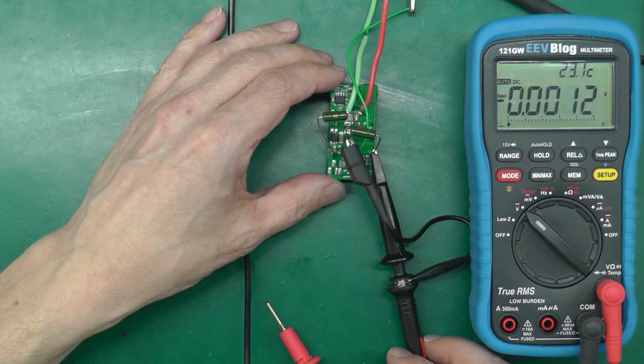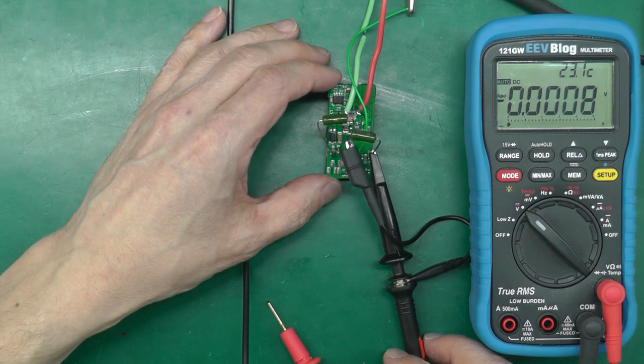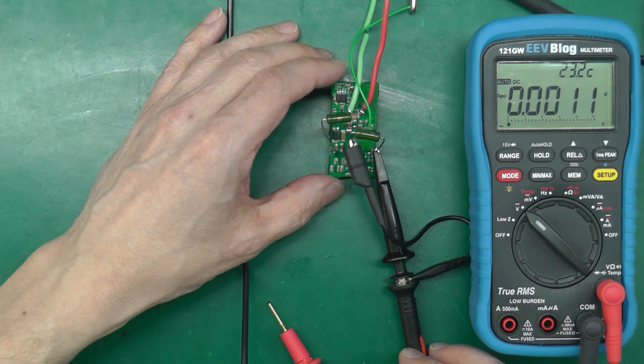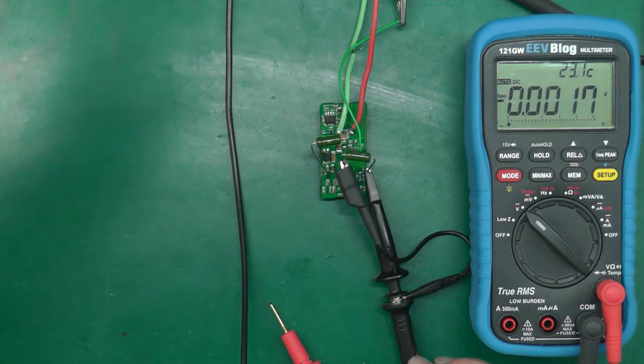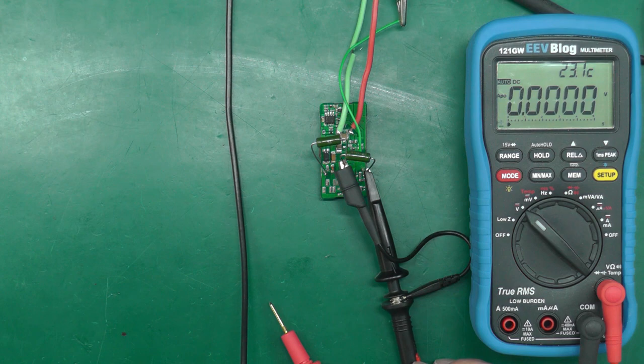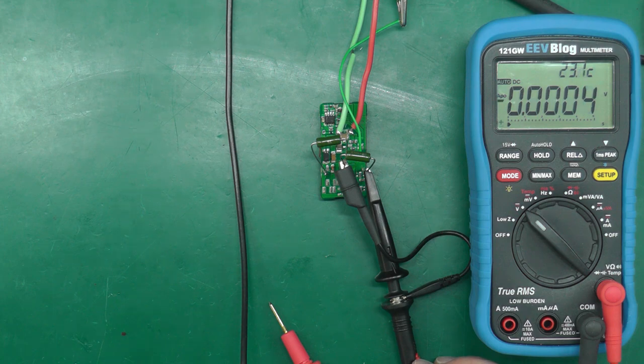I'm going to wind up the incoming supply to 18 volts, as per spec—it's 9 to 18 volts. I'll just go across the incoming range there and take it up to 18 volts.